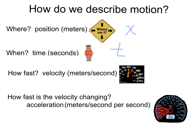The next question is, how fast? What's the speed or velocity of the object? We're going to measure that in meters per second. Here you see the speedometer measuring 60 miles per hour as the object's velocity. We'll use meters per second and represent velocity with the letter d.